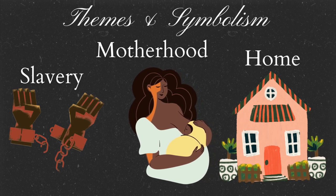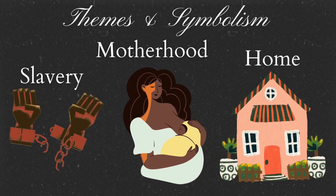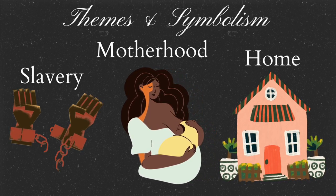Sethe and Paul D were both slaves who had been freed after the Civil War. However, they are still haunted by their past and memories which continuously torment them throughout the novel, recalling events of when they were dehumanized and treated like livestock — overworked, beaten, and sold.